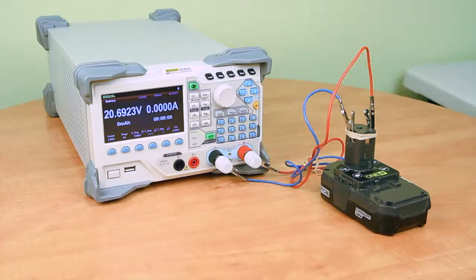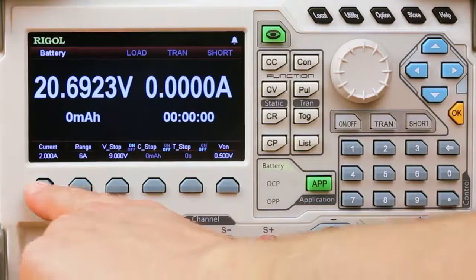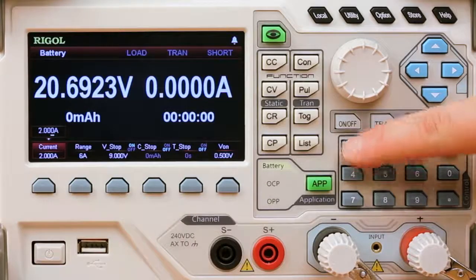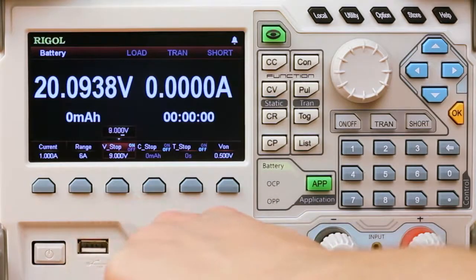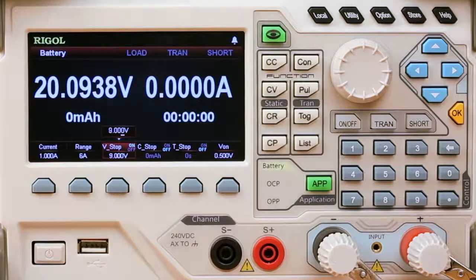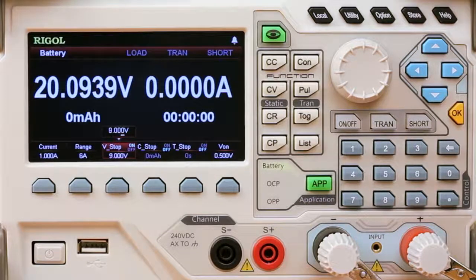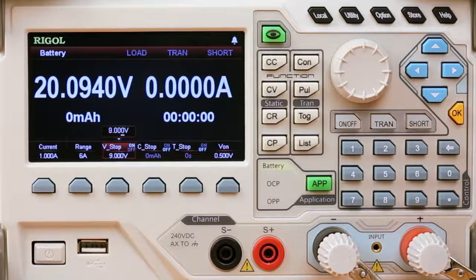We hit the app button and go into battery mode. Let's set the current for a 1 amp constant current pull. Here we're going to use the V-stop to stop our test. Pretty common on a battery test to stop it at roughly half the voltage of the normal battery voltage. Here we're going to set 9 volts for our 18 volt battery.